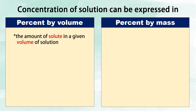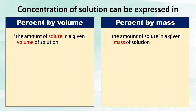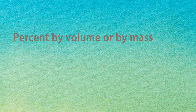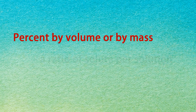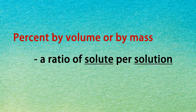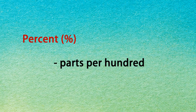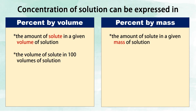Percent by volume is the amount of solute in a given volume of solution, while percent by mass is the amount of solute in a given mass of solution. Percent by volume or by mass is a ratio of solute per solution, because percent means parts per hundred. Percent by volume is the volume of solute in 100 volumes of solution.